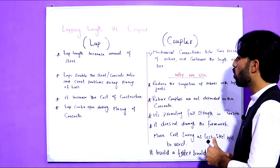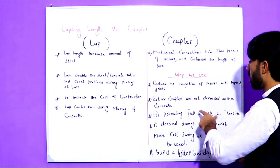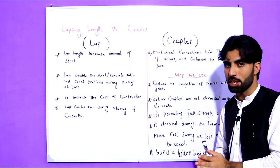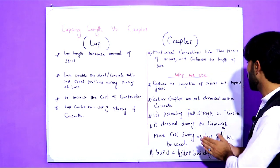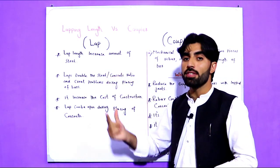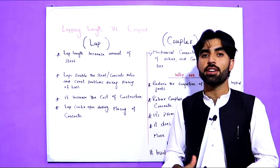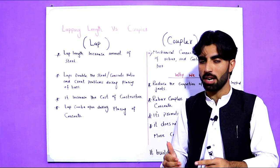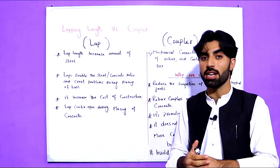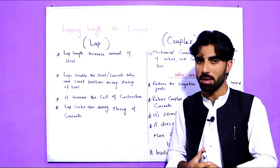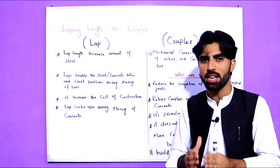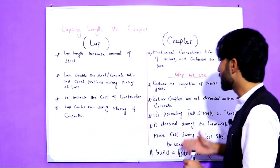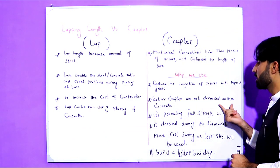Rebar couplers are not dependent on the concrete grade. You can use any grade of concrete because the coupler connection doesn't depend on it. But for lapping length, the lap length is dependent on the grade of concrete — if the concrete grade is low, we increase the lapping length; if the concrete grade is high, we decrease the lapping length. Coupler is independent of concrete grade.